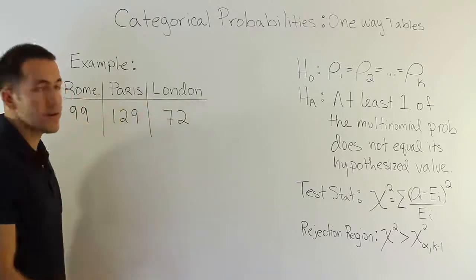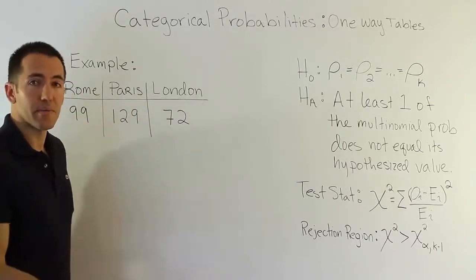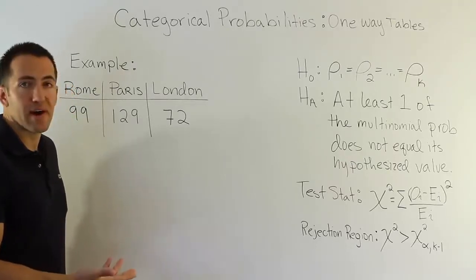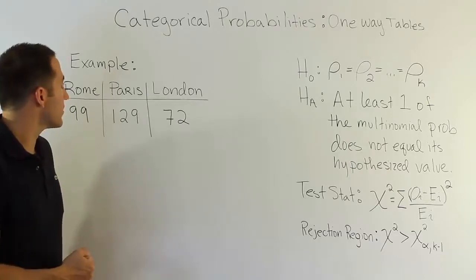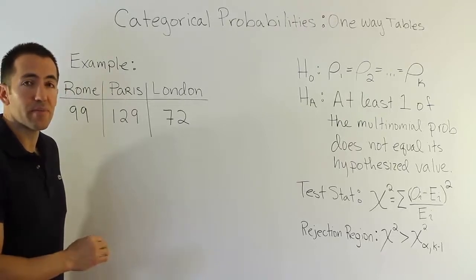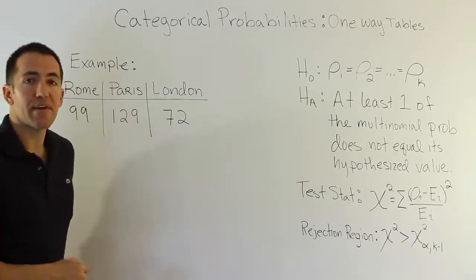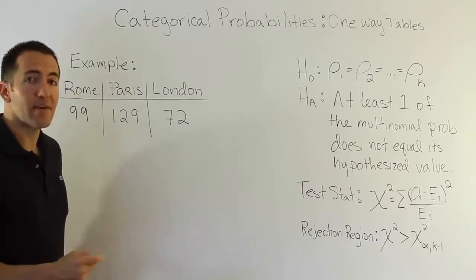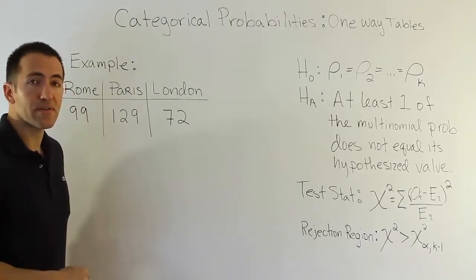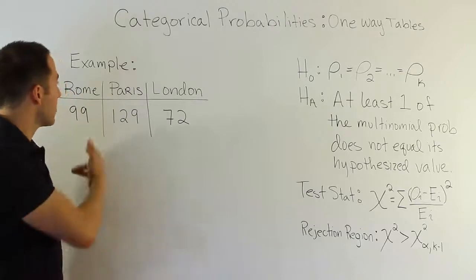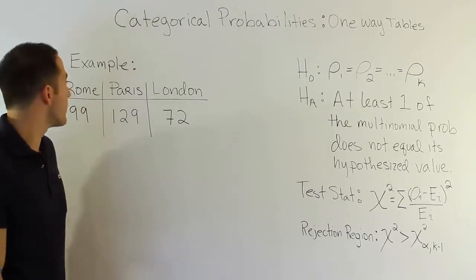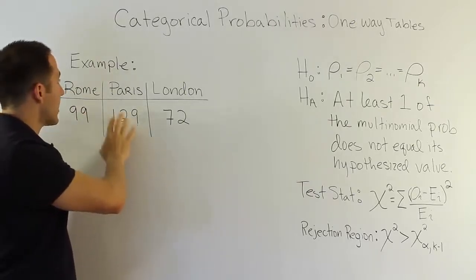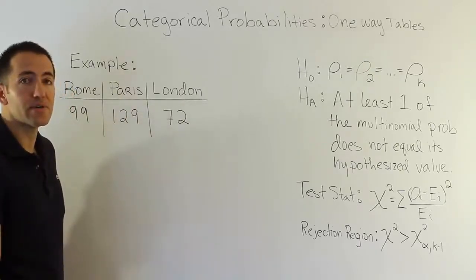The data is from a survey that was essentially a multinomial experiment. Multinomial experiments have five conditions that must be met, and this experiment met those conditions. Basically, it involved asking 300 people which of these three cities they would like to have a free trip to. The data turned out to be that 99 people said they wanted to go to Rome, 129 chose Paris, and 72 people chose London.